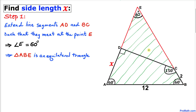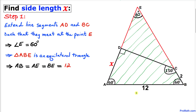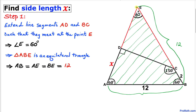Therefore we conclude that triangle ABE is an equilateral triangle, since all angles are 60 degrees. That means side AB, side BE, and side AE are all equal in length. Since AB is 12 units, side BE is 12 units and side AE is 12 units as well.